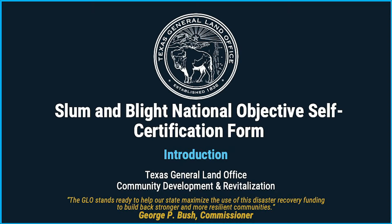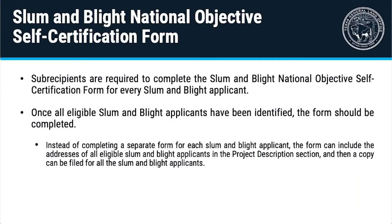Please note, you will need Microsoft Word to view and edit the document. Sub-recipients are required to complete the Slum and Blight National Objective Self-Certification Form for every Slum and Blight applicant. Once all eligible Slum and Blight applicants have been identified, the form should be completed. Instead of completing a separate form for each applicant, the form can include the addresses of all eligible applicants in the Project Description section, and then a copy can be filed for all of them.